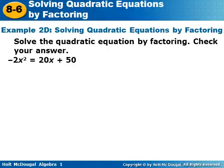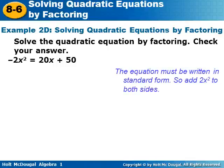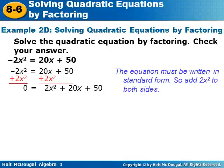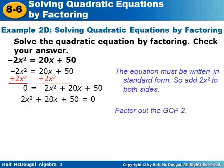Solve the quadratic equation negative 2x² equals 20x plus 50 by factoring and check your answer. This is not yet in standard form, so we first add 2x² to both sides, giving zero equals 2x² plus 20x plus 50. Then we factor out the greatest common factor of two, leaving zero equals two times (x² plus 10x plus 25).